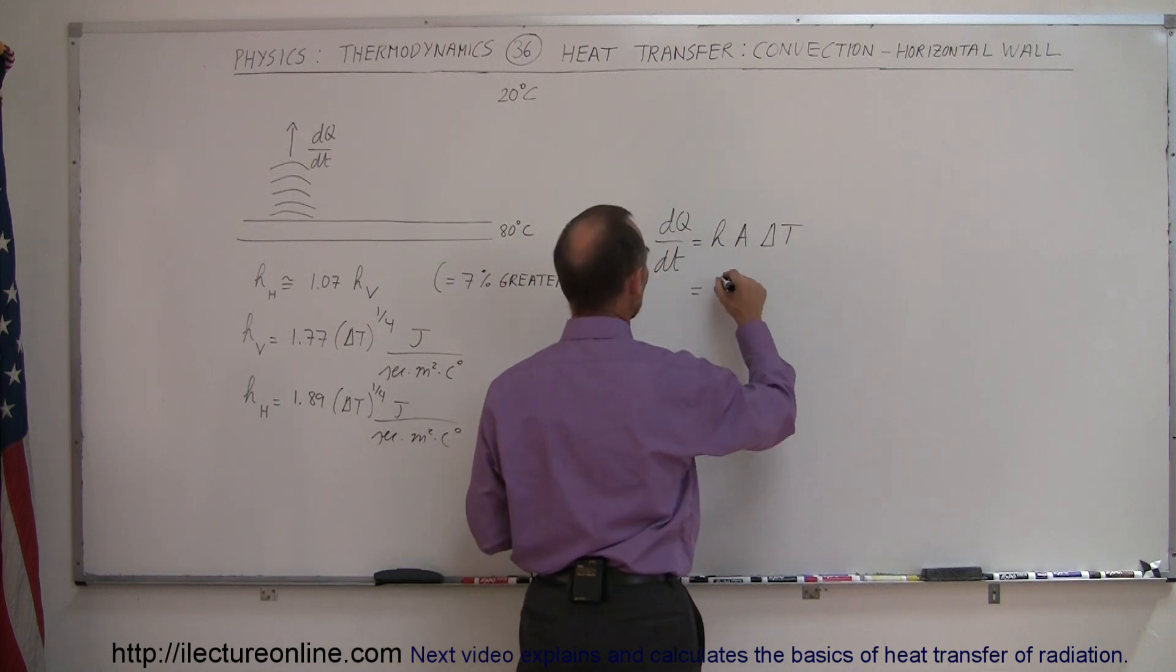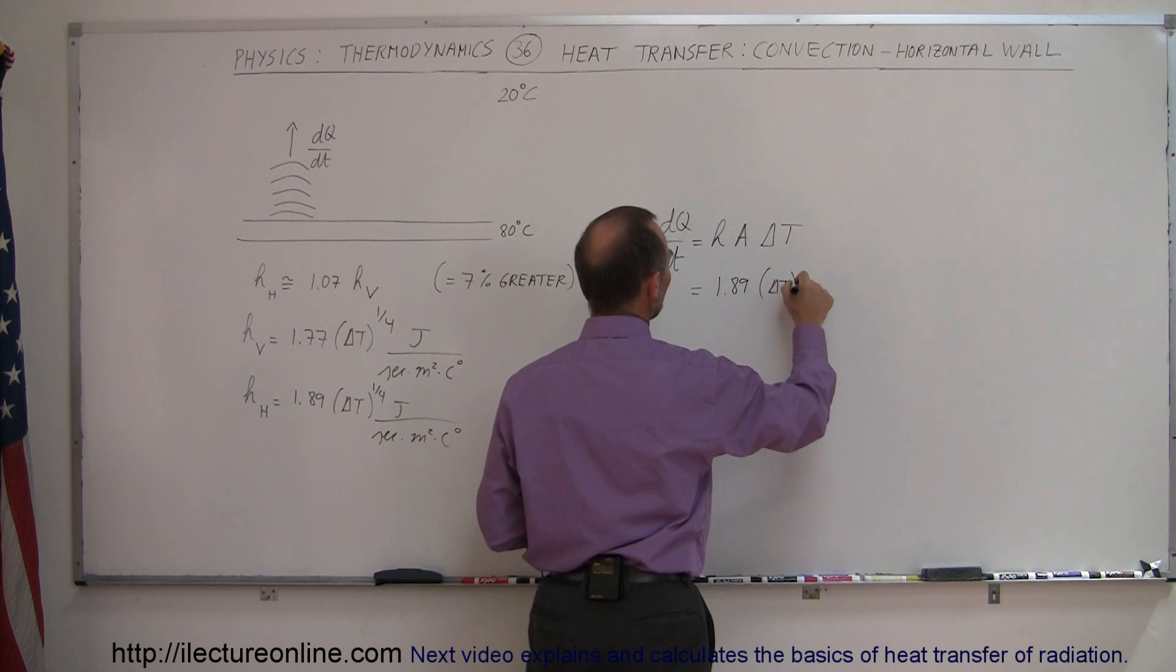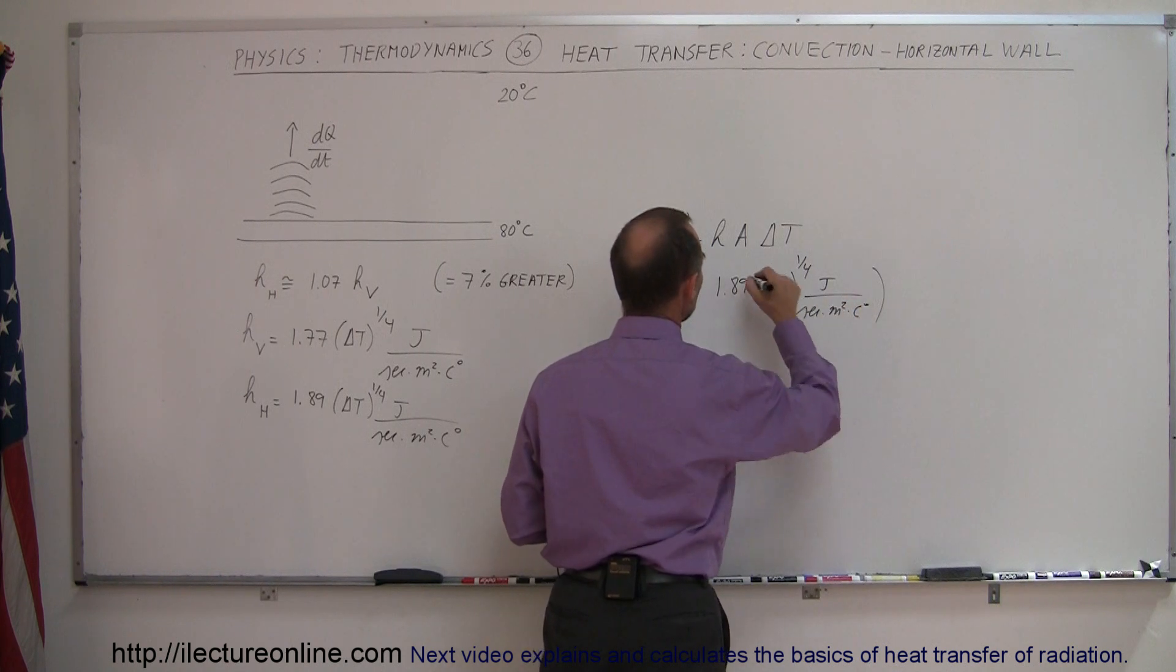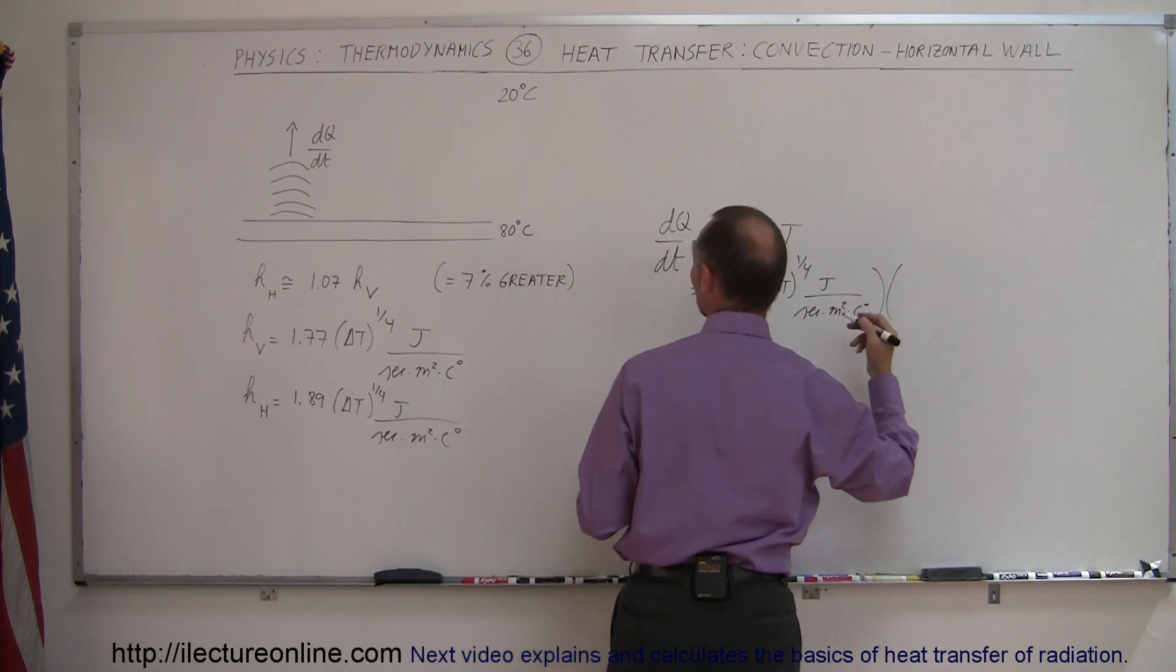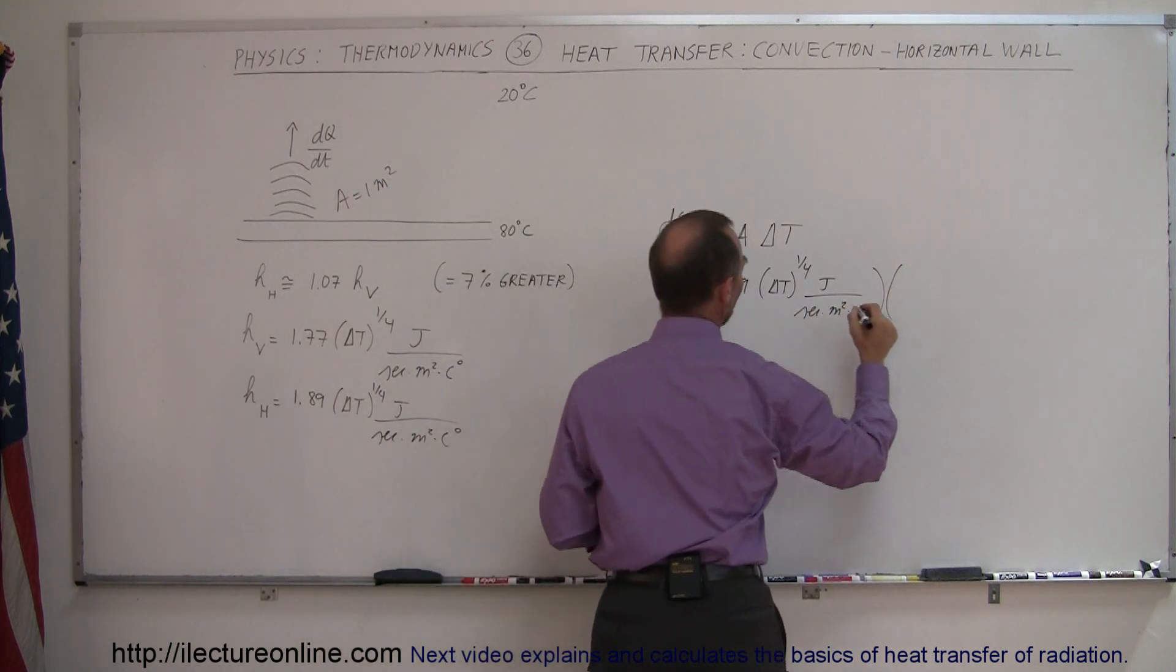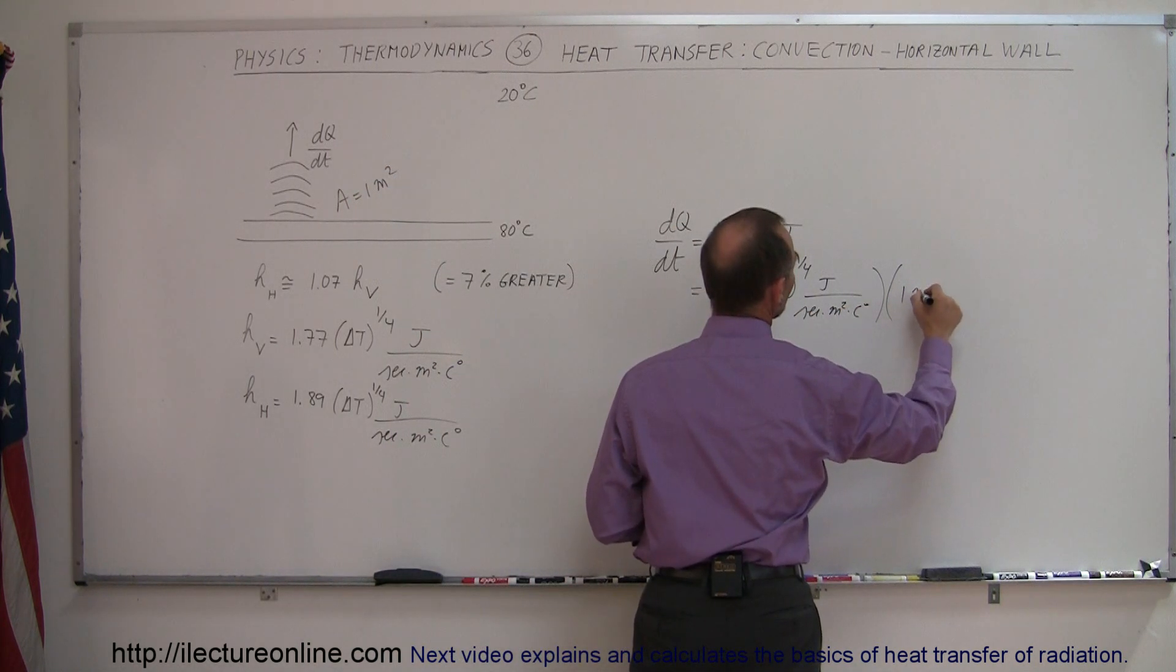So in this case, our H would be 1.89 times the delta T to the one-quarter power times joules per second per meter squared per centigrade degree. Multiple times the cross-sectional area. And so let's say we just do it for area equals to 1 meter squared. So we just get 1 meter squared in here.